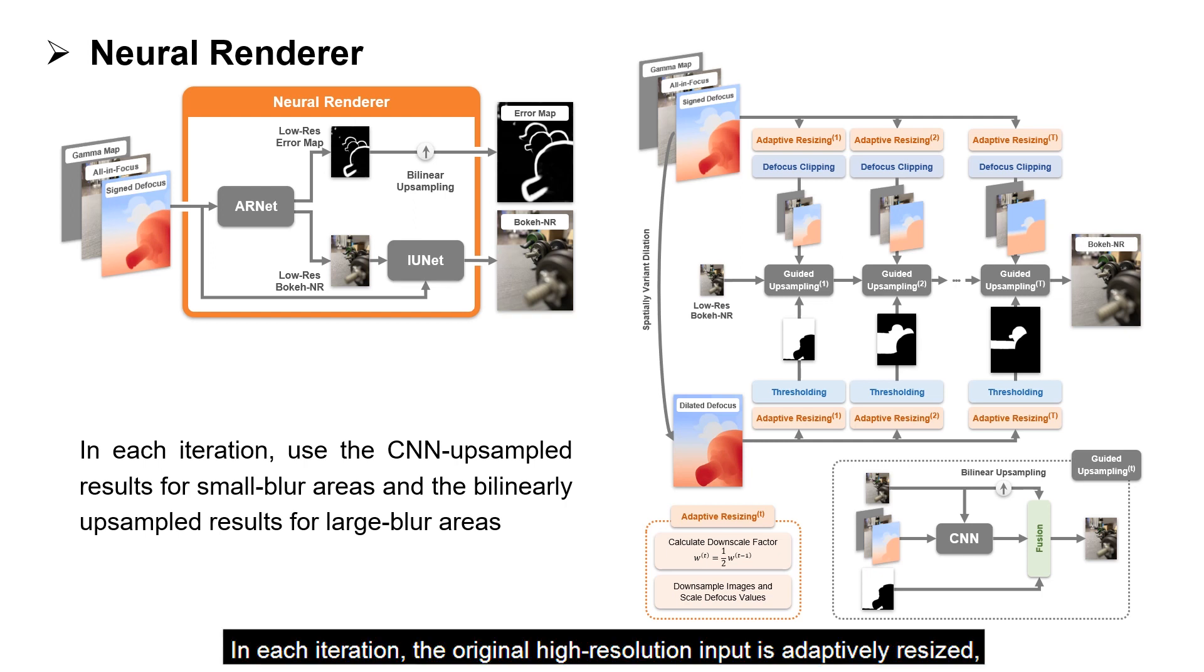In each iteration, the original high-resolution input is adaptively resized, and the defocus values beyond the acceptable range of the CNN are clipped. Then, in the guided upsampling module, we use the CNN upsampled results for small-blur areas, and use the bilinearly upsampled results for large-blur trimmed areas.